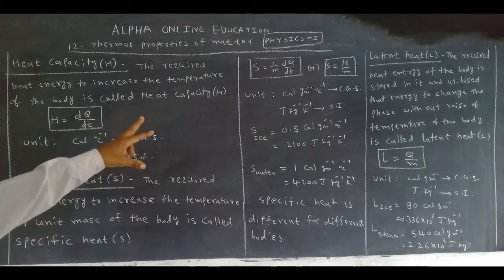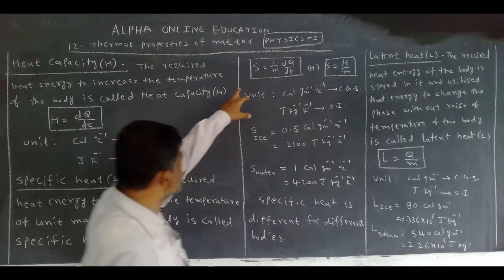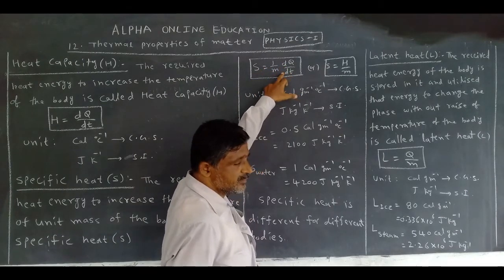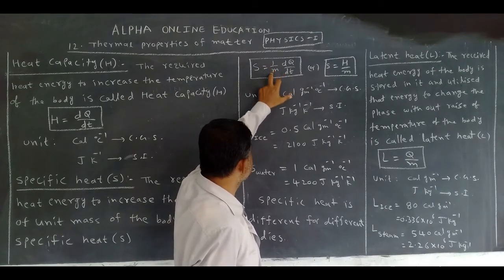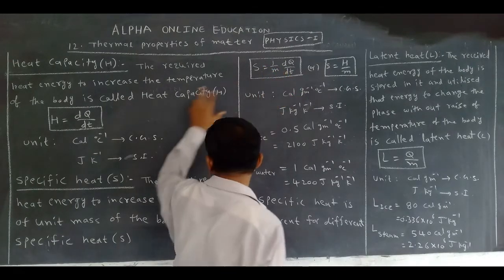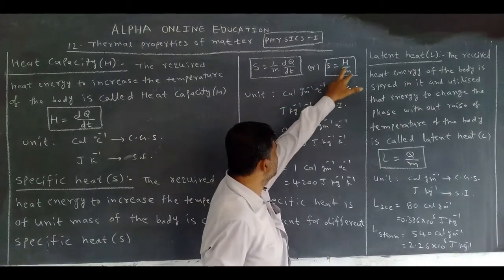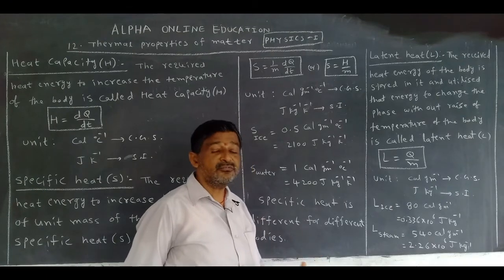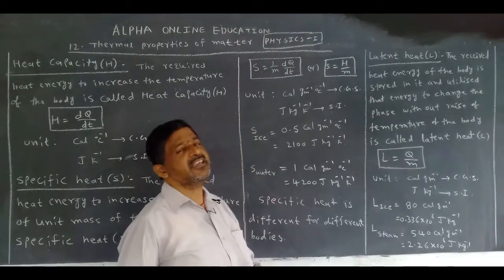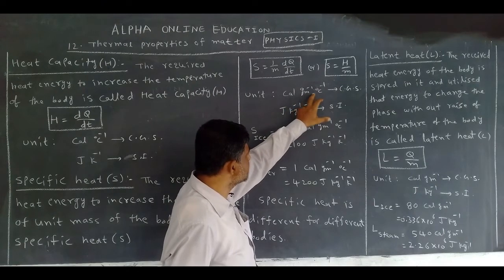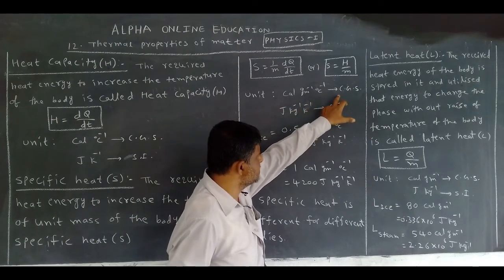What is the mathematical expression for S? S equals 1 by M, dQ by dT. Since dQ by dT is H, we can also write it as H by M. What is the unit for specific heat? Calorie, gram inverse, centigrade inverse in CGS system.